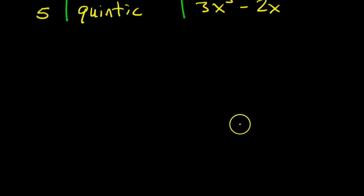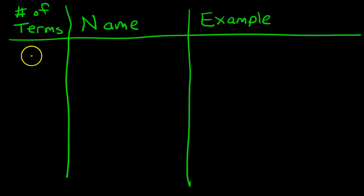Now, naming according to the number of terms is really simple and there's not a very long list. If there's one term, for example, if I just have 3x, that is a monomial. If a polynomial has one term, we call it a monomial. For example, if I had just 3x squared, that's one term. That is a monomial.